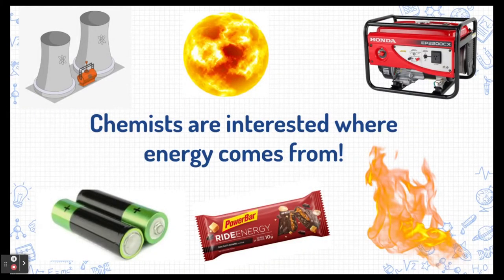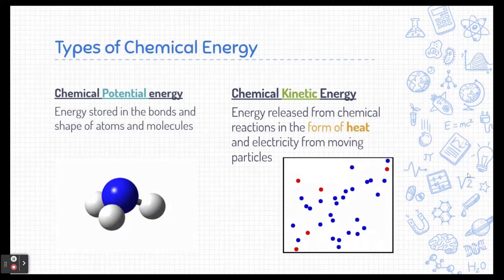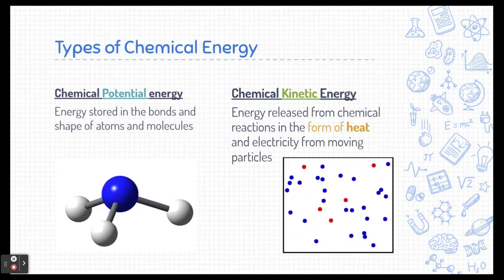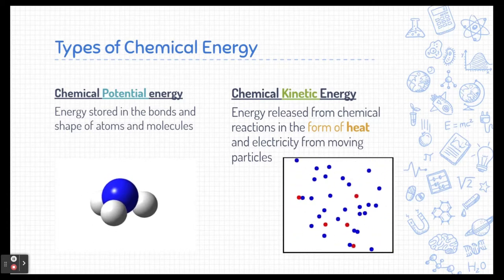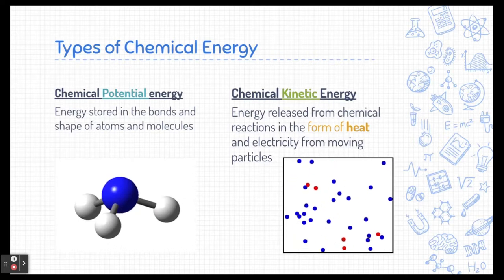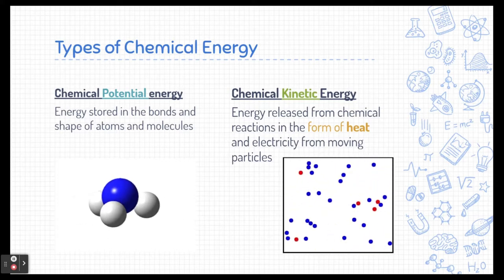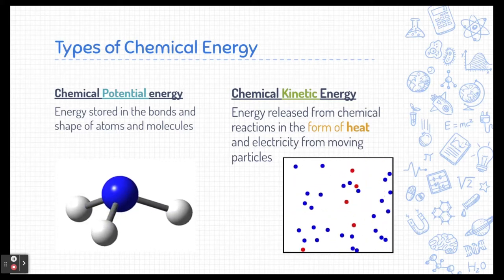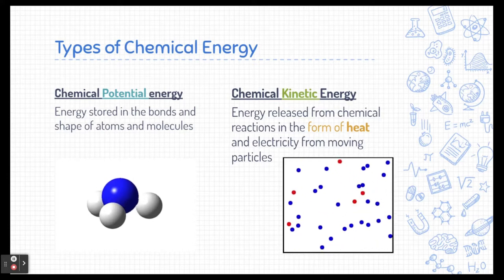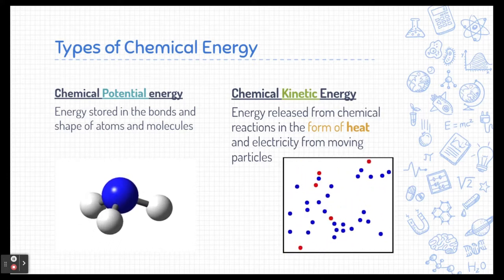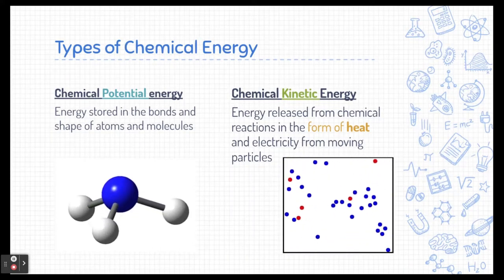Now chemists are very interested in where energy comes from. So let's talk about the two main forms of energy. There's chemical potential energy and chemical kinetic energy. Potential is energy stored in the bonds and shapes of the atoms and molecules. While kinetic energy is released typically in the form of heat or electricity because the particles are moving.